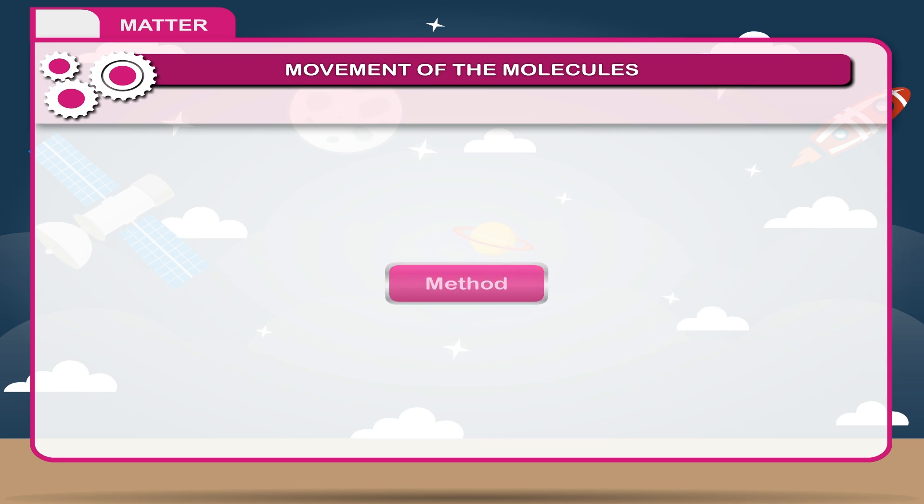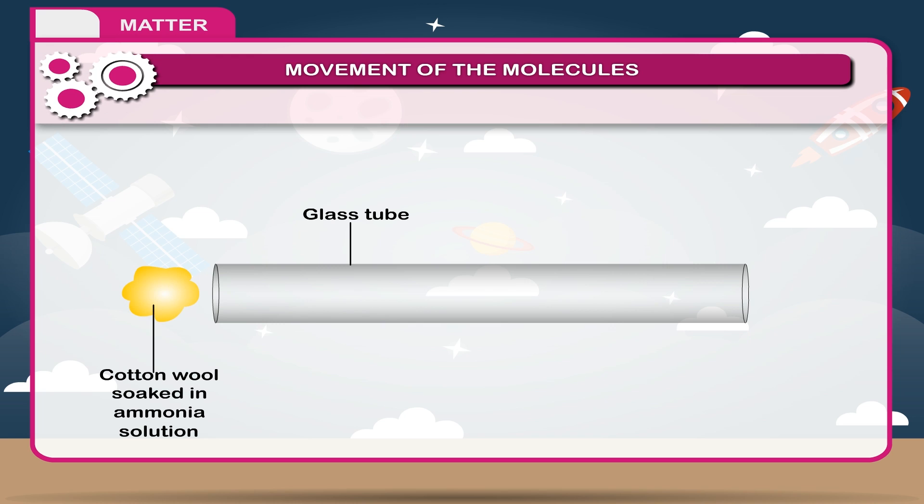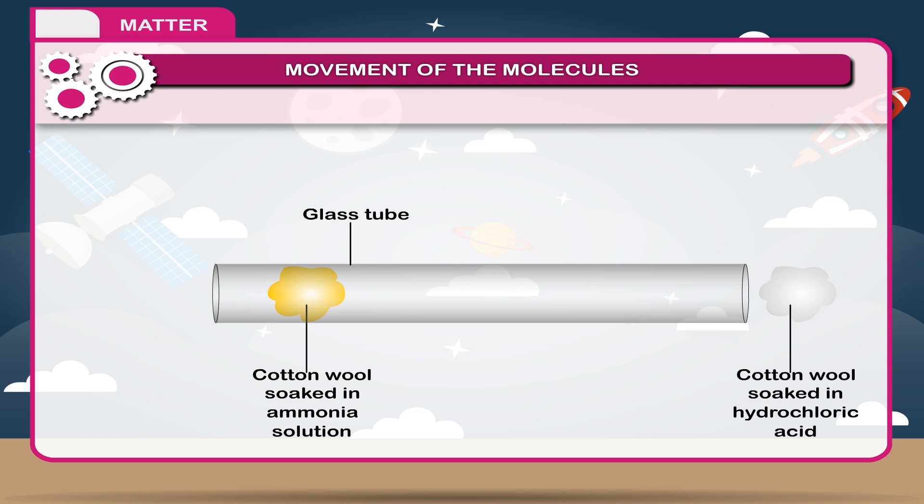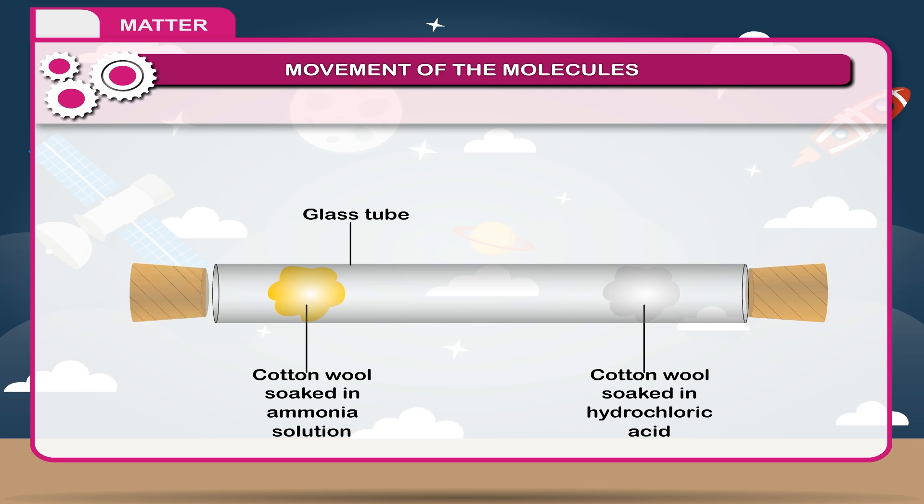Method: Take a long wide glass tube open at both ends. Now, soak some cotton wool in ammonia and put it at one end of the tube. Take another cotton wool and soak it with hydrochloric acid. Now, put it into tube at another end. Close the tube tightly with cork.